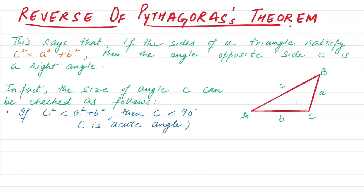Remember that if the hypotenuse squared is less than perpendicular squared plus base squared, then C will be an acute angle.